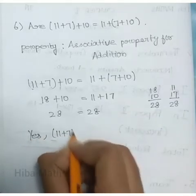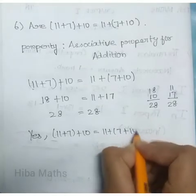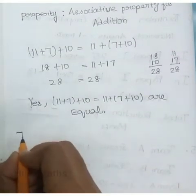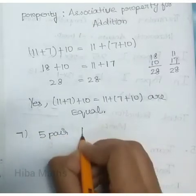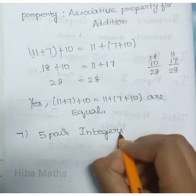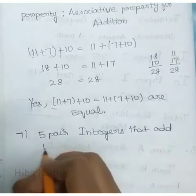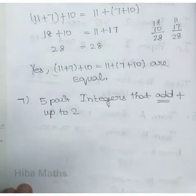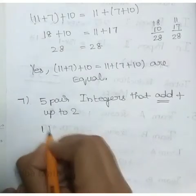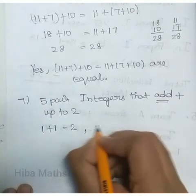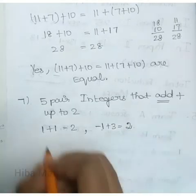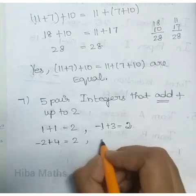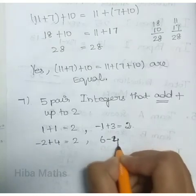Question 7: 5 pairs of integers that add up to 2. Integers are minus and plus numbers. Add up means we need to do addition to get 2. What integers add up to 2?